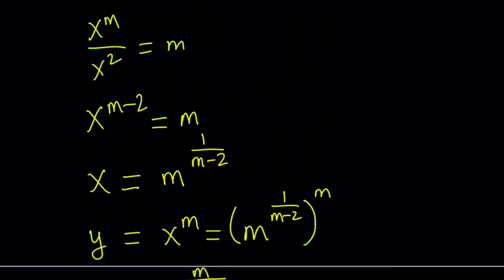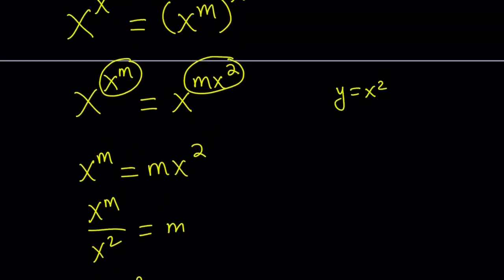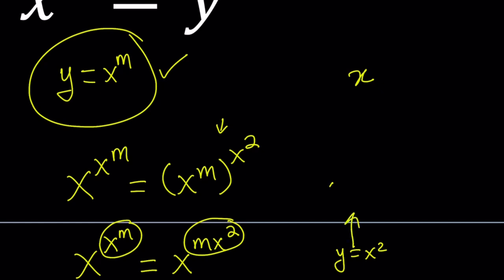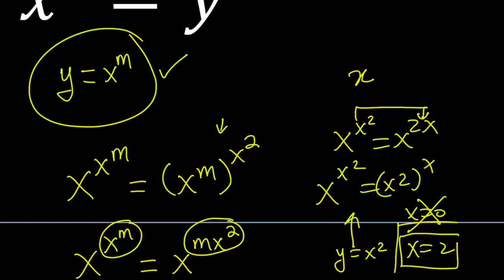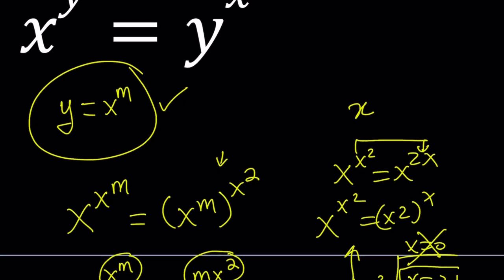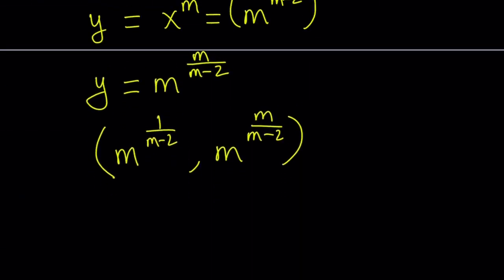What happens if m equals two? You can look at that case separately. Suppose y equals x squared, then you get x to the power x squared equals x squared to the power x, which simplifies to x to the x squared equals x to the 2x. This gives x equals 0 and x equals 2, but x equals 0 is rejected since 0 to the power 0 is problematic. So x equals 2 is the only solution from this case. Since y equals x squared, y would be 4. So you can look at that separately and get back to the general solution.